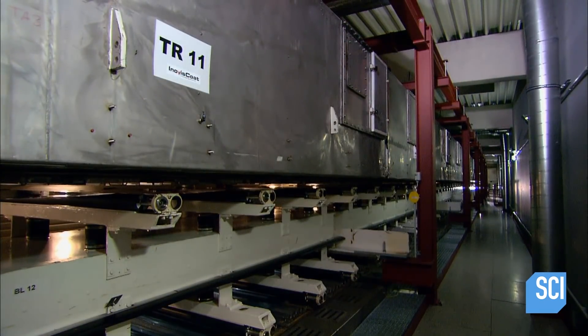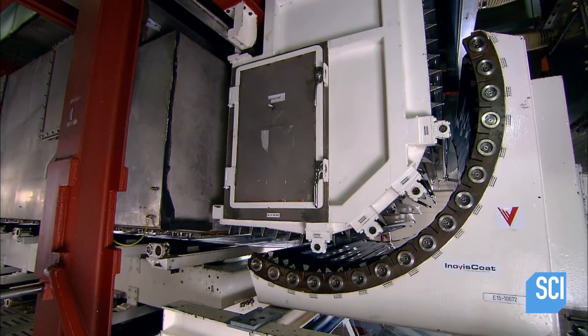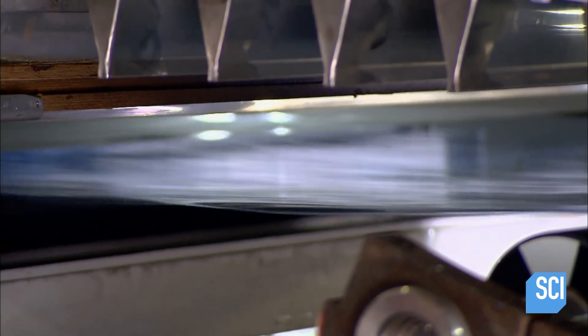The trip through the dryer is 87 yards long. Hot air dries the chemicals on the surface of the film. Once again, it all happens in the dark to protect the light-sensitive film.